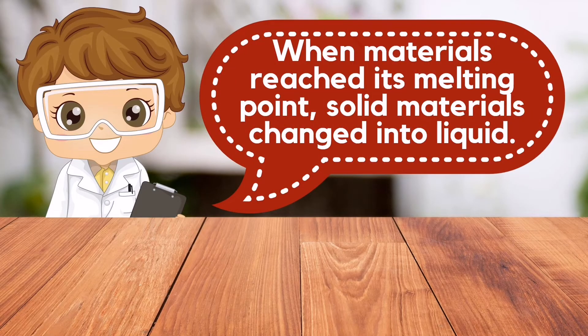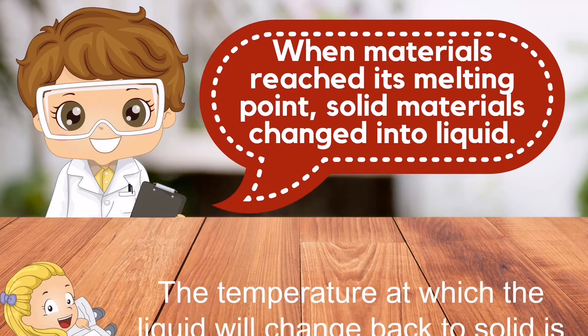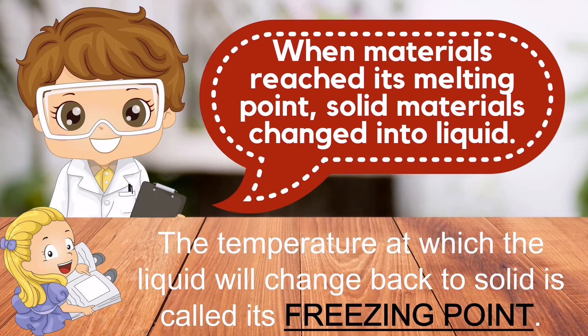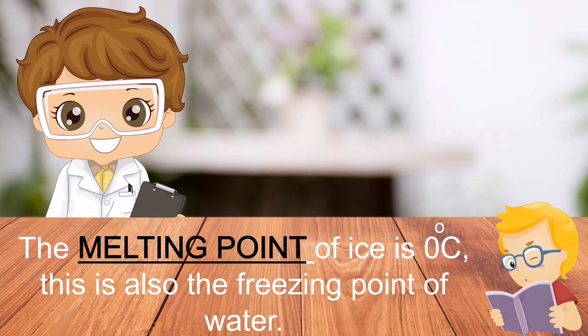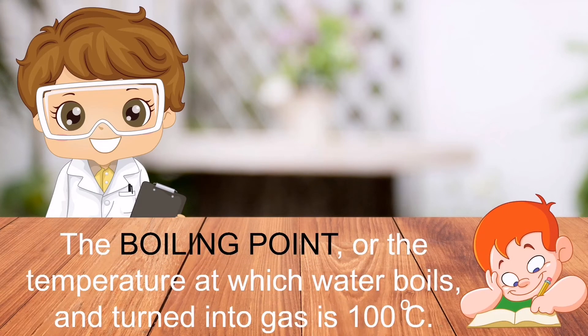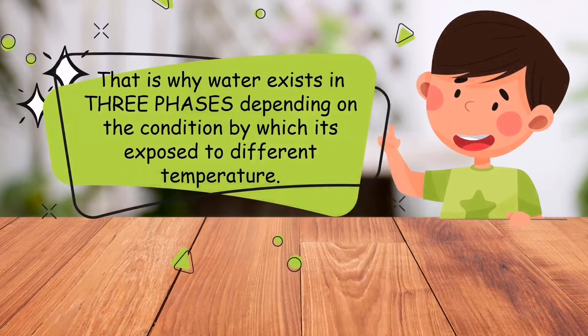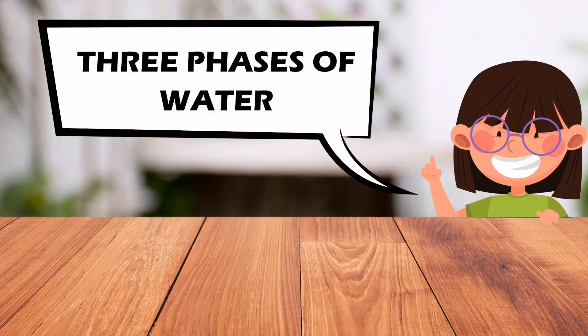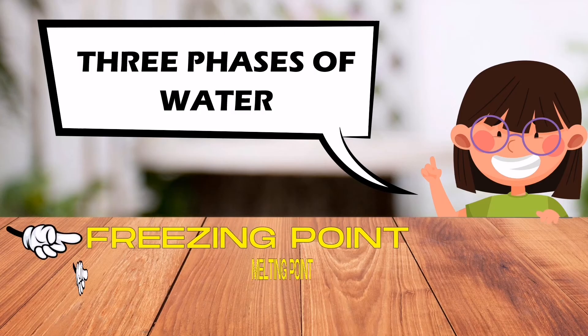When materials reach their melting point, solid materials change into liquid. The temperature at which the liquid will change back to solid is called the freezing point. The melting point of ice is 0 degrees Celsius, which is also the freezing point of water. The boiling point — the temperature at which water boils and turns into gas — is 100 degrees Celsius. That is why water exists in three phases depending on the conditions and temperature it is exposed to: freezing point, melting point, and boiling point.